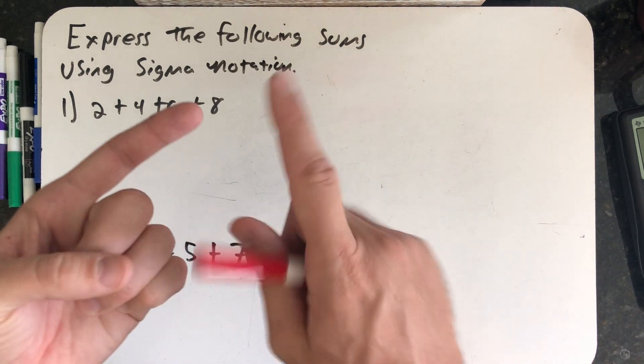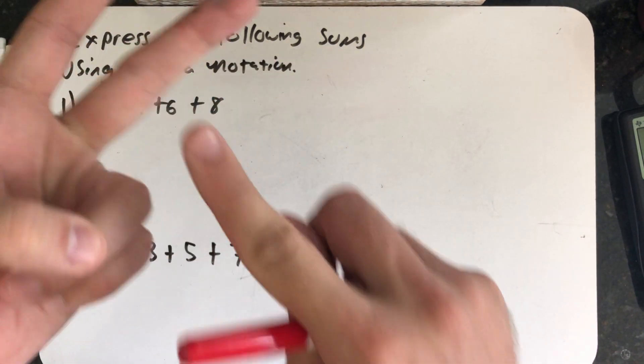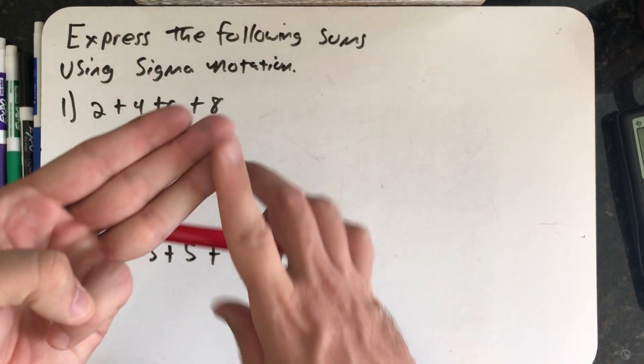So we have to figure out the starting place of the index, the stopping place of the index, and a kth term formula.